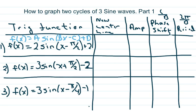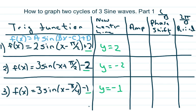Hi everyone. We're going to graph two cycles of three sine waves. These are the three sine functions, and we're going to quickly graph these. You should have watched the video prior to this, as I go a little slower there. Our new center line for these is y equals two, y equals negative two, y equals negative one. Recall that's the vertical shift. The amplitude is this number out front — recall it's really the radius — so amplitude is two, three, and three.